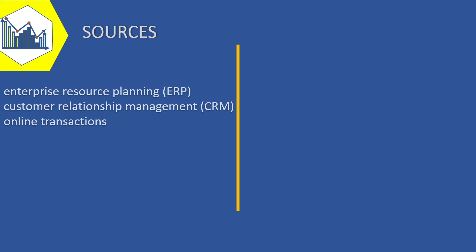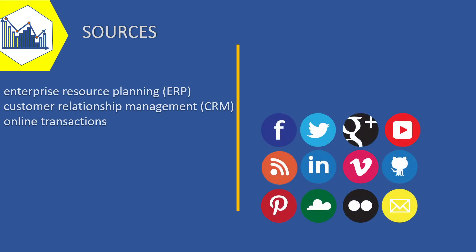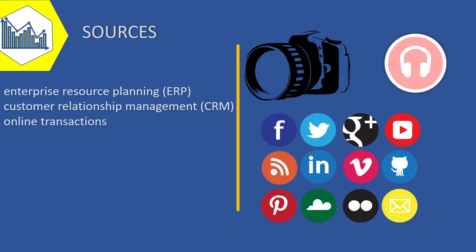About sources: traditional data typically derives from enterprise resource planning (ERP), customer relationship management (CRM), online transactions, and other enterprise-level data. Big data derives from a broader range of enterprise and non-enterprise sources, including social media, device and sensor data, audio-visual data, and unstructured text, video, image, and audio files — which cannot be handled using the columns and rows of traditional databases.